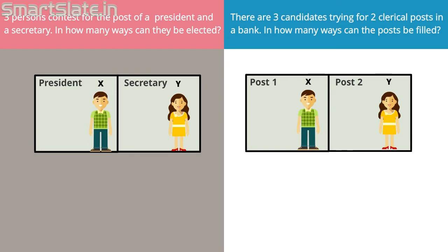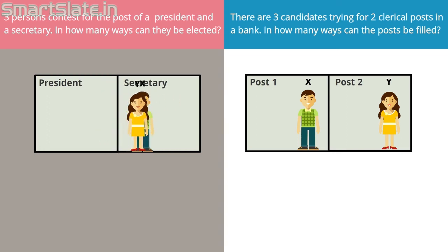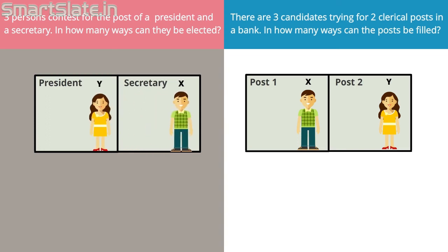Let's study these scenarios a little more closely. In the first example, the order in which we choose to fill the posts does matter. Persons X and Y can be chosen in two different ways: in the first case, X is president and Y is secretary; in the second case, Y is president and X is secretary.